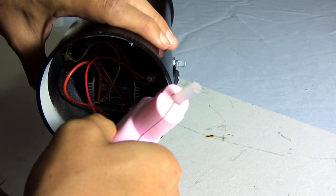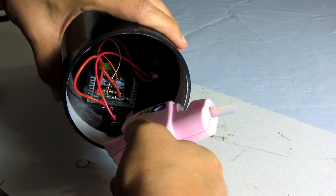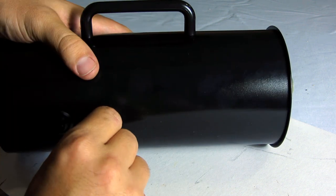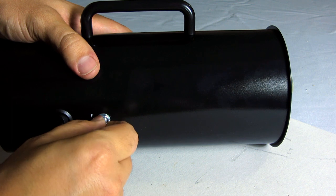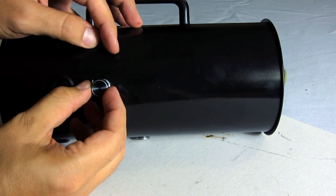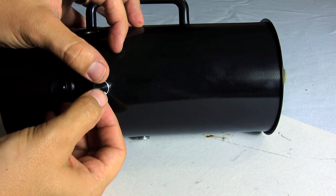That power socket is still a bit loose, so I'm going to put some hot glue around it to keep it from pulling out when I pull the power cord. To put the knob on the potentiometer, first turn it all the way up, then put the knob on so the line is at the five o'clock position. This knob just pushes on.